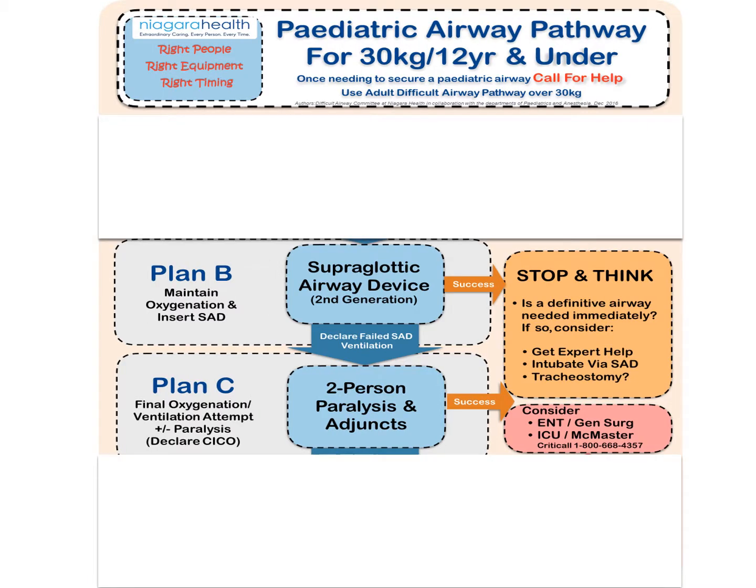I want to focus on some subtle differences for pediatrics versus our adult population, specifically related to Plan B and Plan C. Oxygenation is absolutely paramount in our pediatric population. Hypoxemia is not well tolerated and will often lead to bradycardia and eventually cardiac arrest. For this reason, it is exceedingly important that when you're anticipating an airway issue with a pediatric patient, you call for help early.